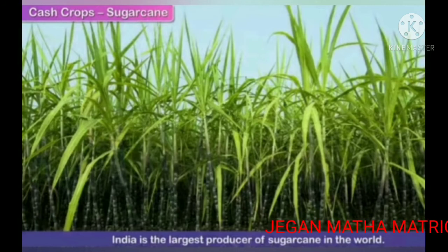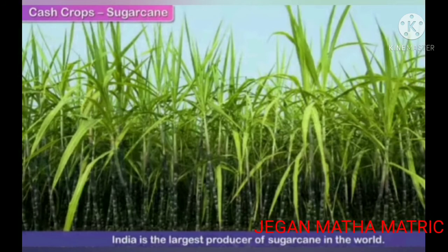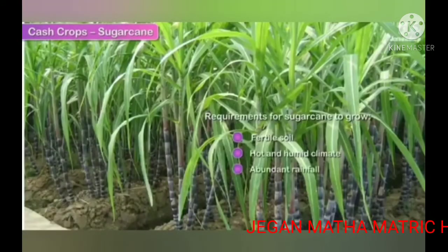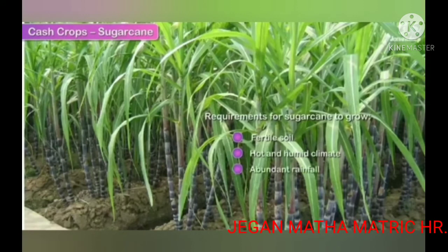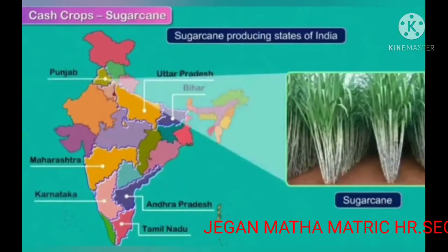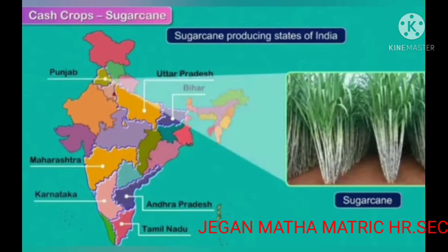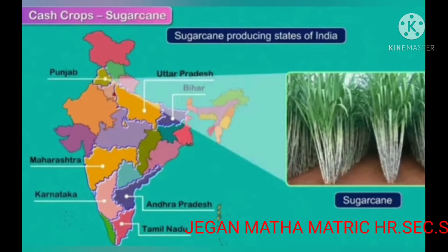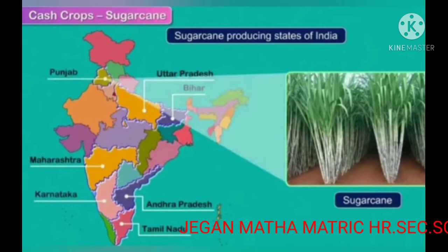Sugarcane requires a hot and humid climate with abundant rainfall. Sugarcane producing states of India are Uttar Pradesh, Bihar, Andhra Pradesh, Tamil Nadu, Karnataka, Maharashtra, and Punjab.